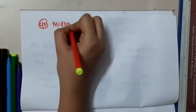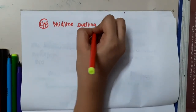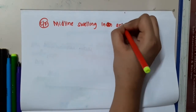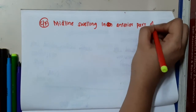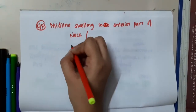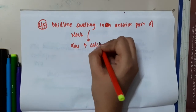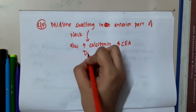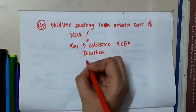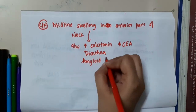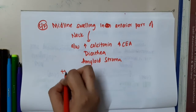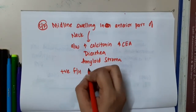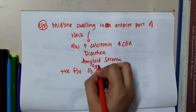In the clinical features, you will see presence of midline swelling in the anterior part of the neck, and this midline swelling is associated with increased calcitonin. It is also associated with increased carcinoembryonic antigen, and there is diarrhea. Amyloid stroma is seen, and there may be a positive family history of hyperparathyroidism.